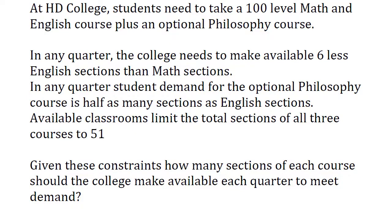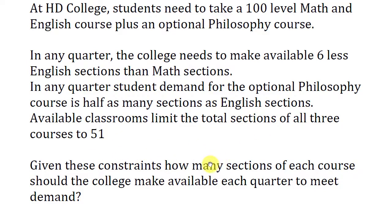Let's now set up a system of linear equations to solve this problem. At HD College, students need to take a 100-level math and English course plus an optional philosophy course. In any quarter, the college needs to make available six less English sections than math sections. Student demand for the optional philosophy course is half as many sections as English sections. Available classrooms limit the total sections of all three courses to 51. Given these constraints, how many sections of each course should the college make available each quarter to meet the demand?